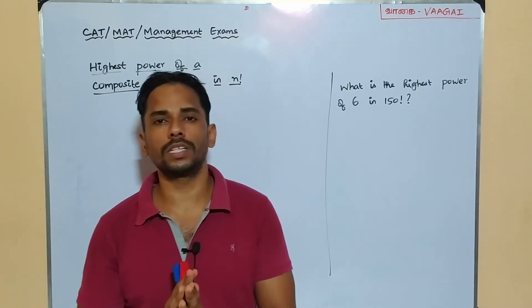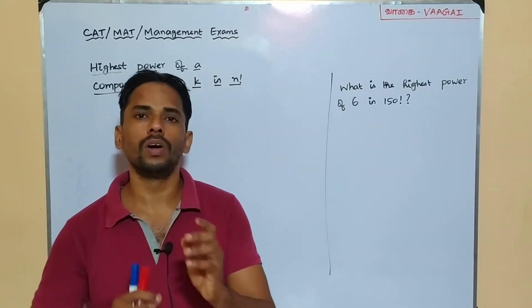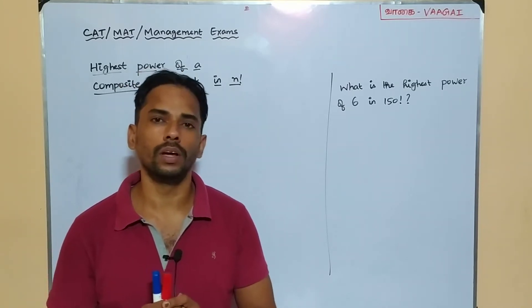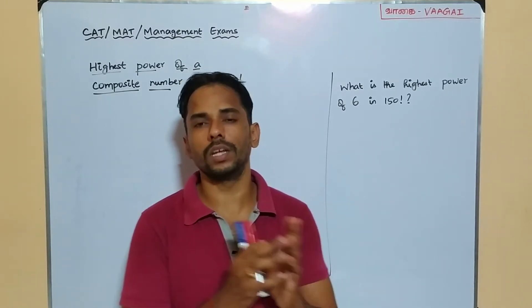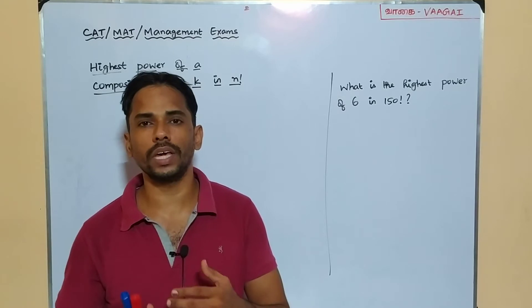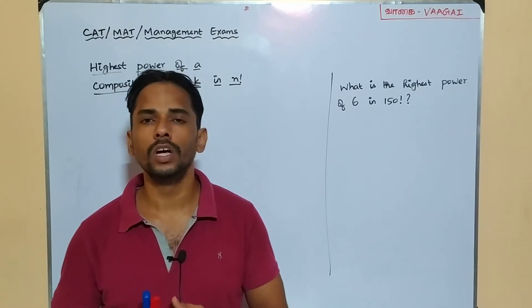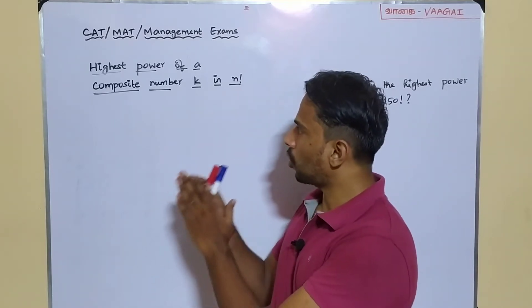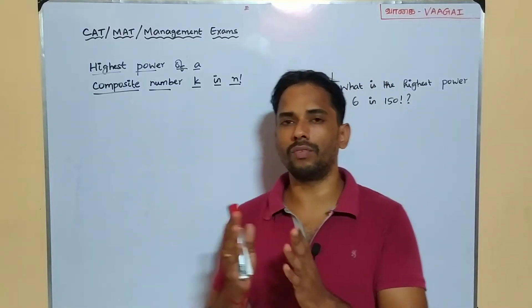In our previous session, we saw the concept of how to find the highest power of a prime number in n factorial. That was our last concept, and continuing that this session, we are about to see an extension of what we saw there. Here we are going to see how to find the highest power of a given composite number k in n factorial.